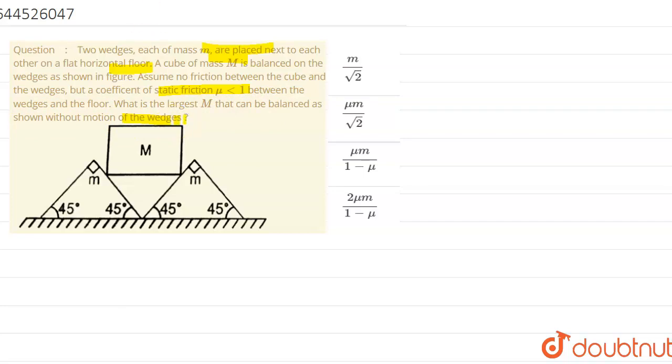Here you can see that the normal reaction forces acting on the wedge. If you are taking this and if this is angle theta, this is normal reaction force. This is n sine theta, this is n cos theta, in opposite reaction acting is n cos theta.